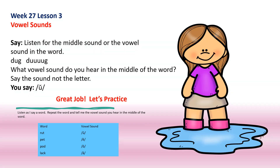Now, listen for the middle sound, or the vowel sound, in the word. D-U-G — D-U-U-G. What vowel sound do you hear in the middle of the word? Say the sound, not the letter. The vowel sound is: uh. Very good.